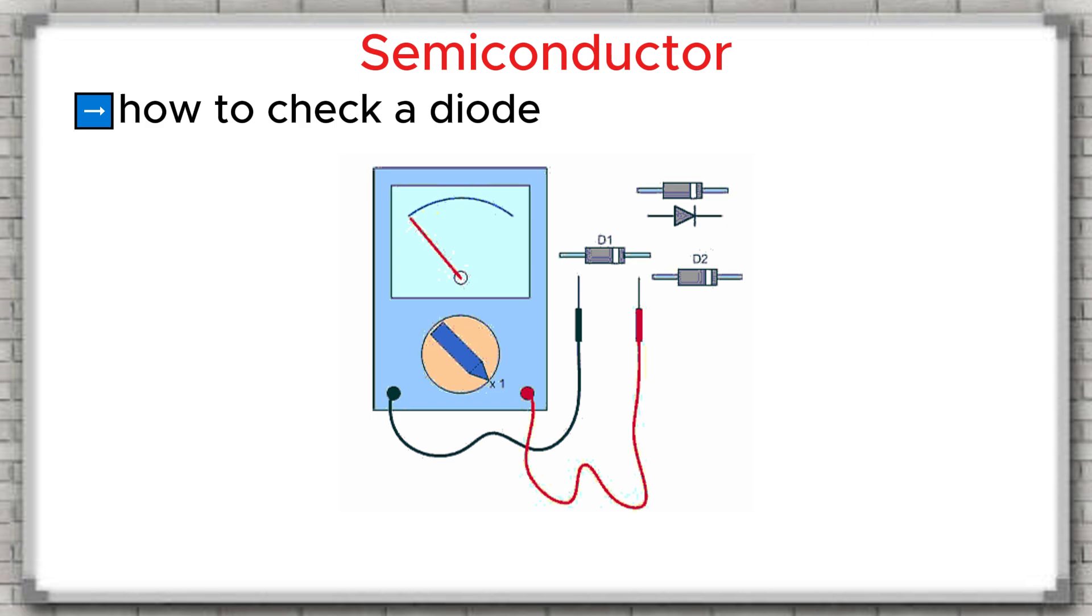If in the forward direction the needle does not move at all, then the diode is open or broken. Finally, if you switch the range to 1 kilo ohm, and in the reverse direction the needle still moves up a little bit, that means the diode is leaky.